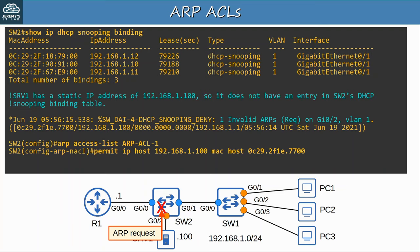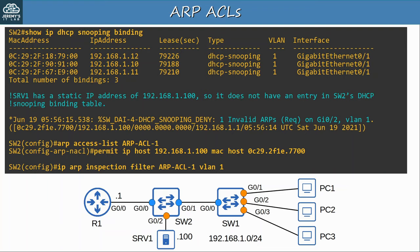To fix this, let's configure an ARP ACL to permit server 1. The command is arp access-list followed by a name. Then I configured permit ip host 192.168.1.100 mac host followed by server 1's MAC address. But creating the ARP ACL alone doesn't help — we have to apply it. The command is ip arp inspection filter, the ACL name, vlan, and the VLAN number. After creating and applying the ARP ACL, when server 1 tries to send an ARP request, SW2 forwards it even though there is no entry in the DHCP snooping binding table.